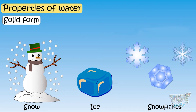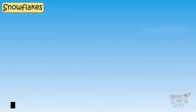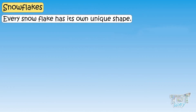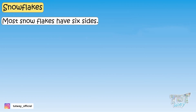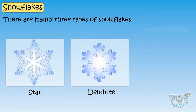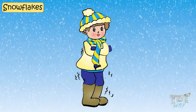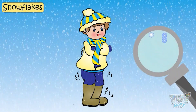One of the solid forms of water is very interesting — that is, snowflakes. Let's see some of the beautiful shapes of snowflakes. If you look closely at snowflakes, you will see very beautiful formations. Each and every snowflake has a unique shape. Even no two snowflakes are alike. Most snowflakes have six sides. There are mainly three types of snowflakes, known as a star, dendrite, and plate. Next time you see fluffy snowflakes drifting down from the sky, don't forget to take a closer look at them.